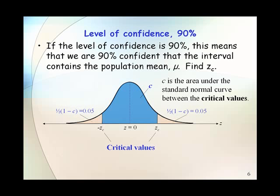So if the level of confidence is 90%, this means that we're 90% confident that the interval contains the population mean mu, and we want to find Z sub C, the critical value.